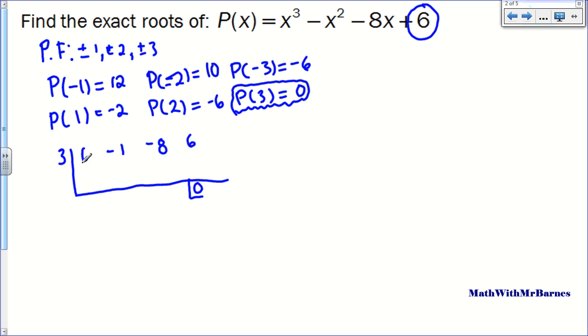So I bring down my 1 right here, and I go 3 times 1 is 3. Negative 1 plus 3 is 2. 3 times 2 is 6. Negative 8 plus 6 is negative 2. 3 times negative 2 is negative 6. Negative 6 plus 6 is 0. So we're in business. That works.